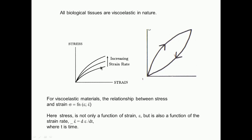The stress not only depends on the strain but also depends on the strain rate. The stress, sigma, is not only a function of epsilon, but also a function of epsilon-dot. Epsilon-dot is given by d epsilon by d t, where t is time. So the rate of strain also determines the stress. That is why, with increasing strain rate, you can have different types of stress-strain graphs. We will talk about viscoelastic behavior later because many biological systems exhibit this.